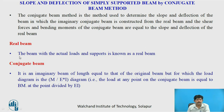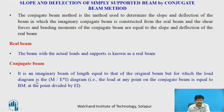Real beam: the beam with the actual loads and support conditions is known as the real beam. Conjugate beam: it is an imaginary beam of length equal to that of the original beam, but for which the load diagram is the M upon EI diagram — that is, the load at any point on the conjugate beam is equal to the bending moment at that point divided by EI, the flexural rigidity.